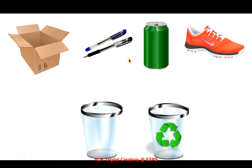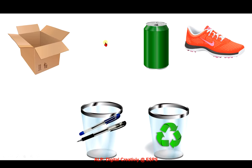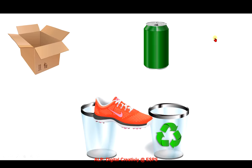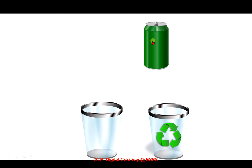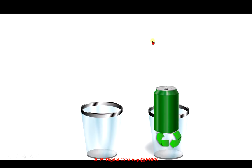Here we have four different objects and you need to click on them to see whether they can be recycled or not. The order of the objects that you click doesn't matter, so you can click on any of them first. Let's start with the pen — pen cannot be recycled. Likewise for the shoe. Then the cardboard can be recycled, and the metal can can be recycled. So the order does not matter.